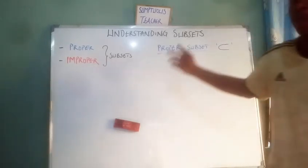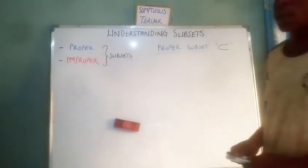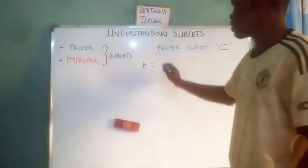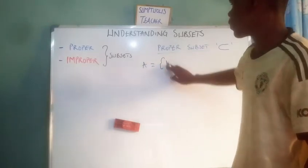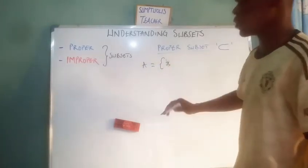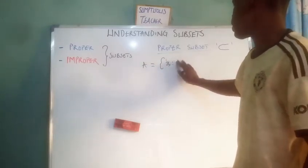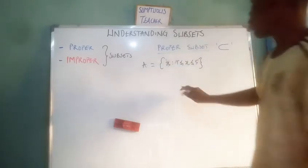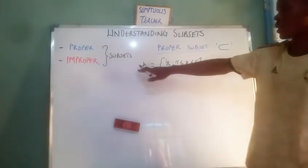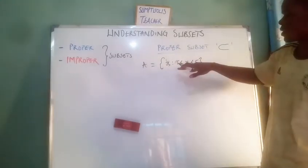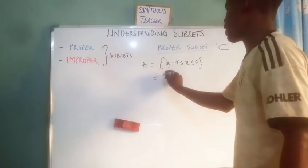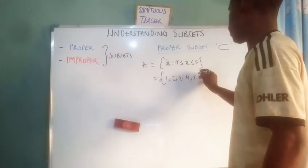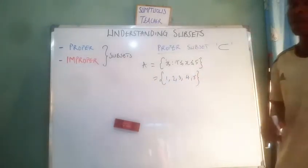Now let's look at proper subsets. Consider set A defined as: A = {x such that x lies between 1 and 5}. Listing this out, A = {1, 2, 3, 4, 5}. This is the listing method.